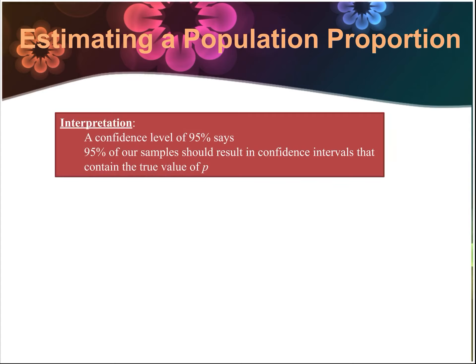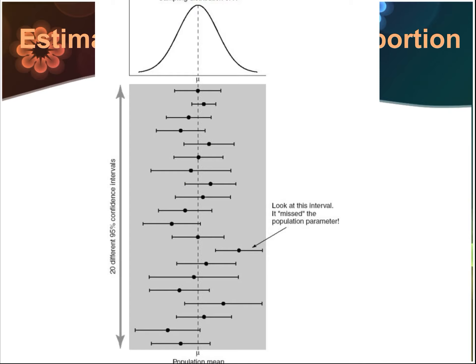A confidence level of 95% says 95% of our samples should result in a confidence interval that contains the true value of p, the population proportion. On the top you see a bell curve for all of our proportions, and below it are 20 different 95% confidence intervals from lots of different samples. Notice the vast majority contain the population parameter — all of them except for one actually contain the population mean.